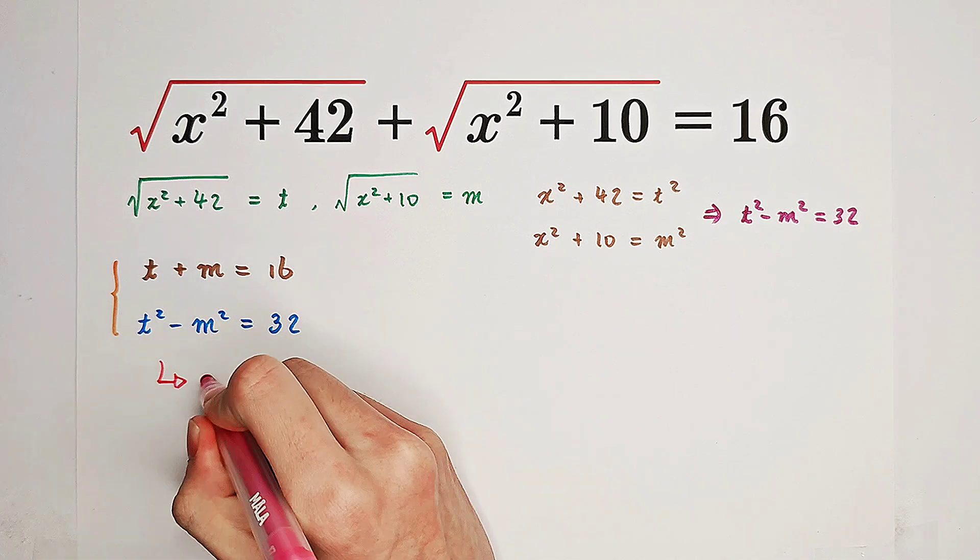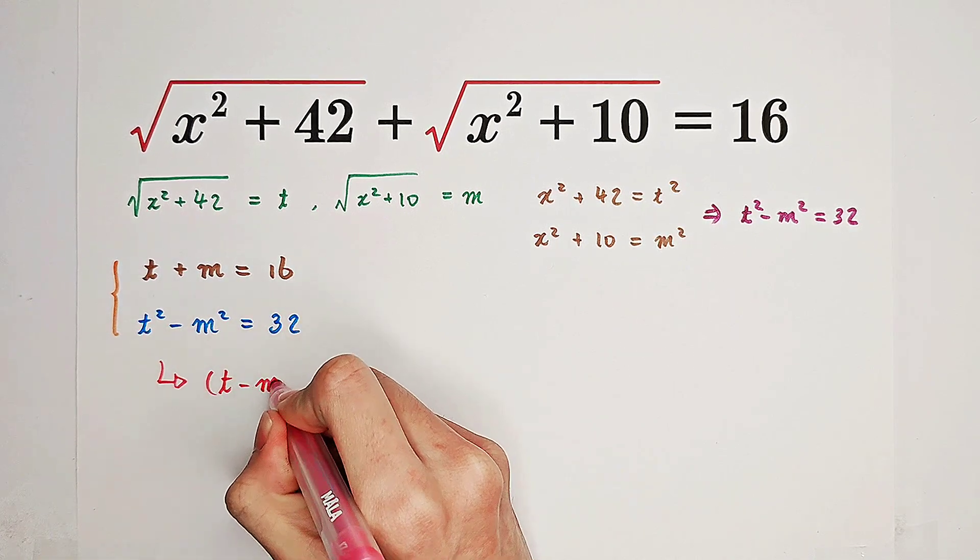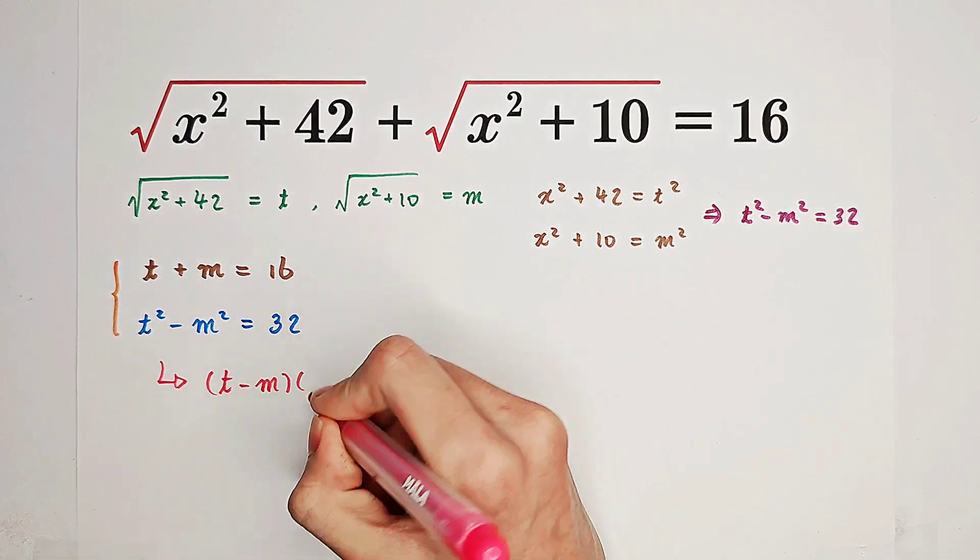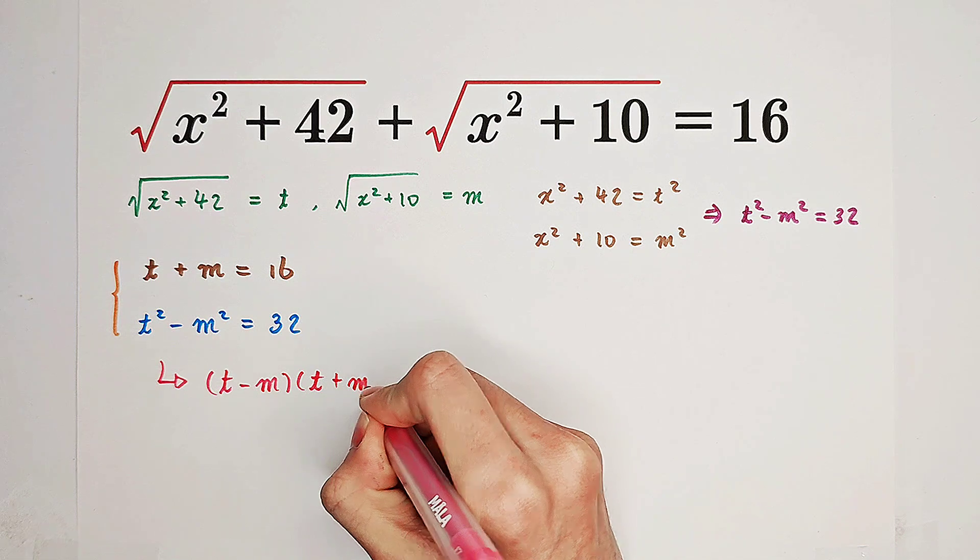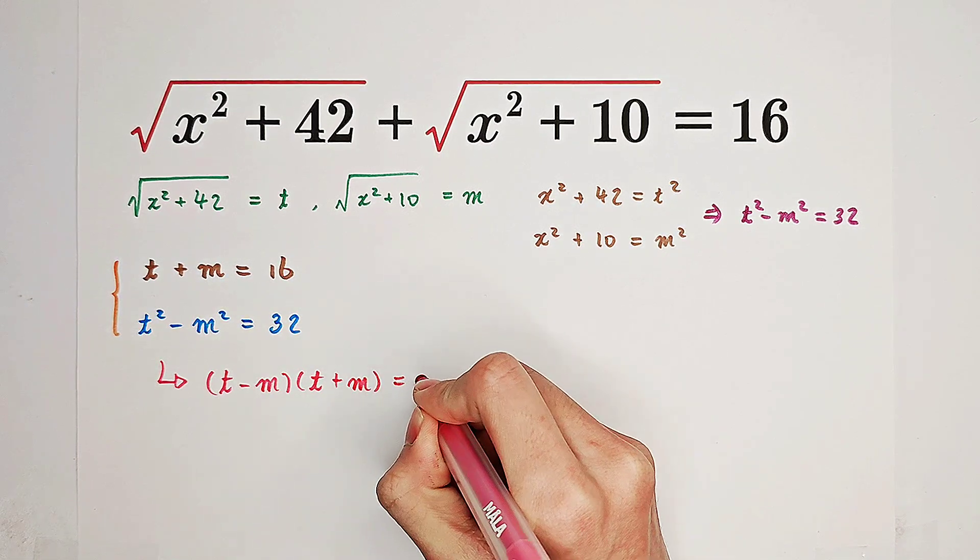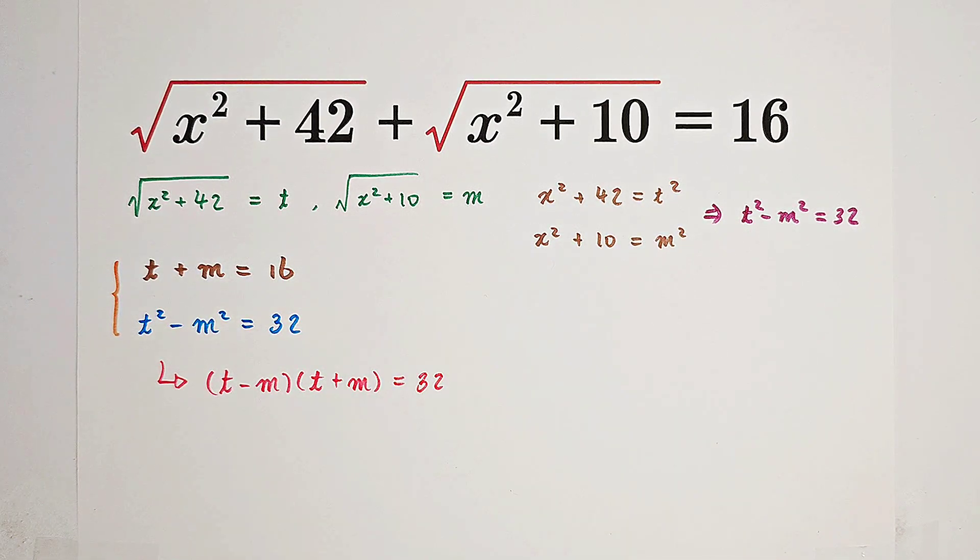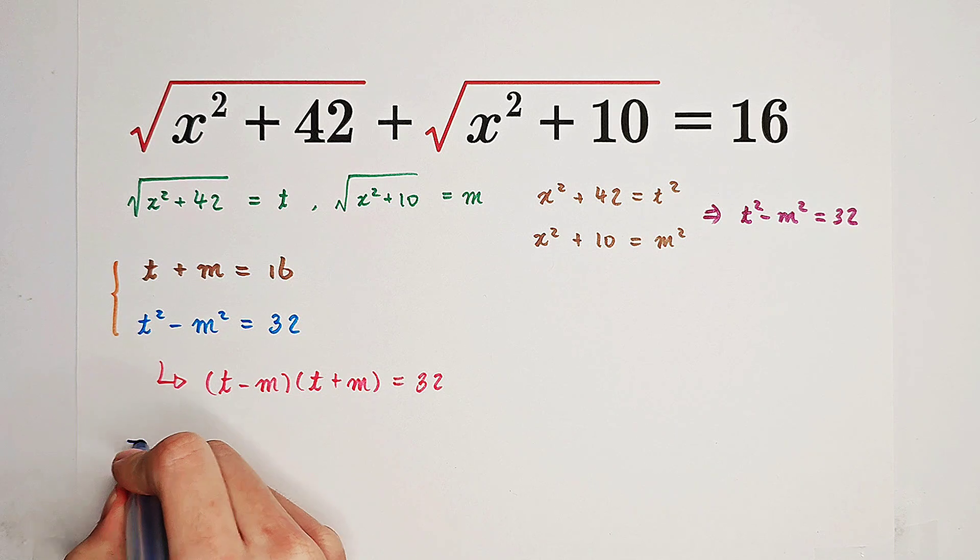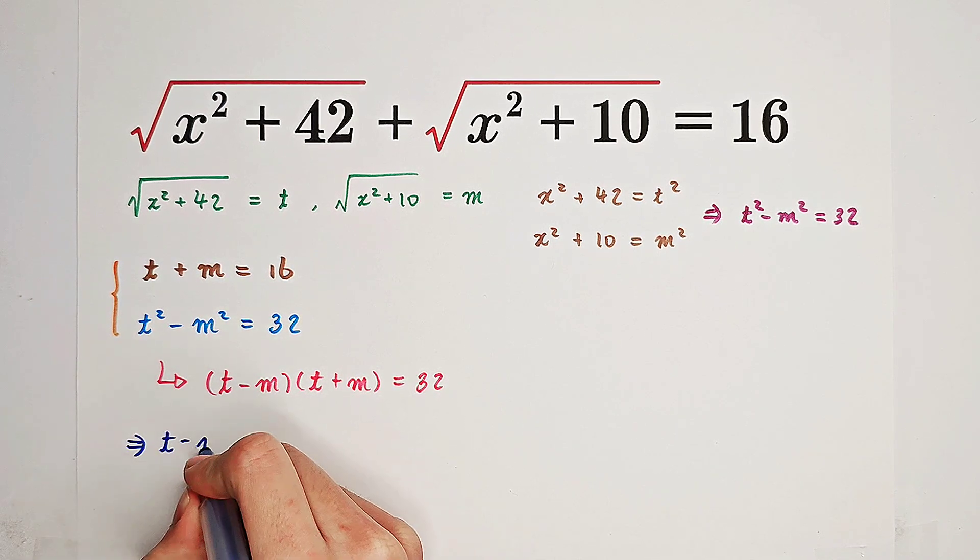From our second equation, we can factorize this. It is t minus m times t plus m equals 32. We know that t plus m is just 16, so from this equation we get t minus m equals 2.